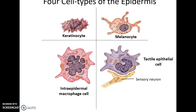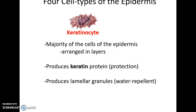The four kinds of cells in the epidermis are: keratinocytes, melanocytes, intraepidermal macrophage cells, and tactile epithelial cells. Keratinocytes make up the majority of the epidermis; they are arranged in many layers and produce the protein keratin over time, making these cells very tough and resistant to forces, providing protection. They also produce lamellar granules, which help make our skin water-repellent.